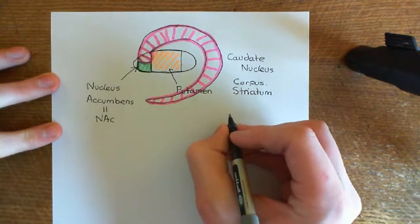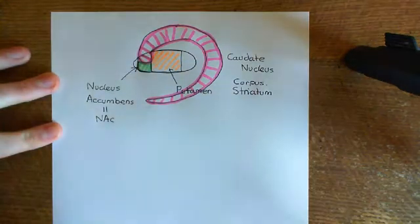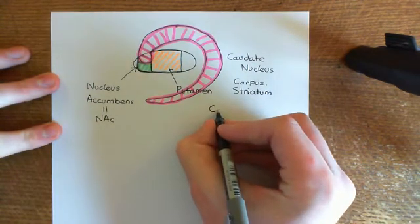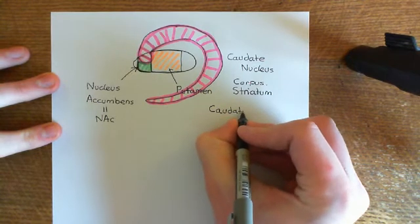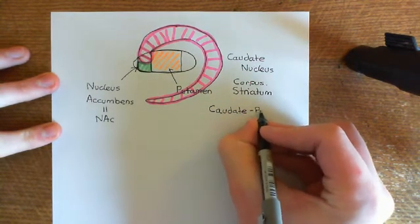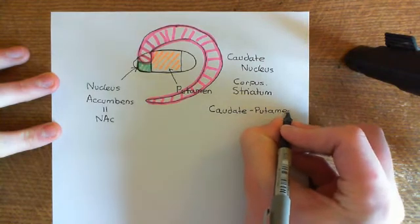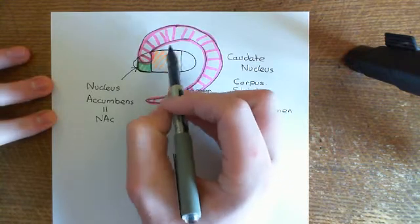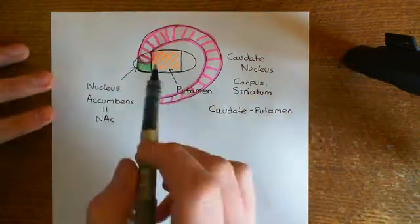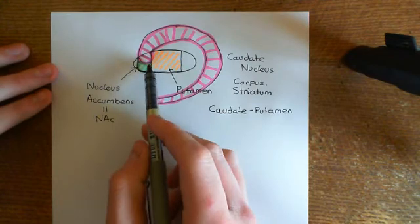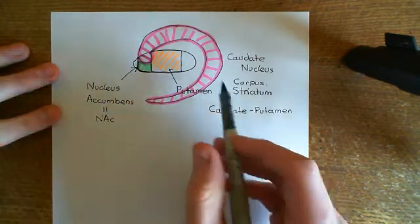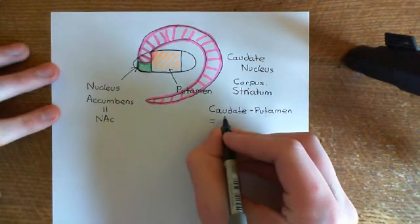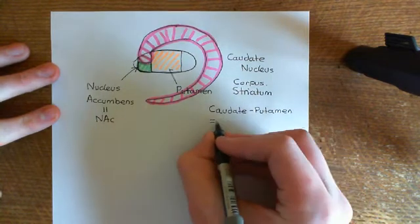There are more useful terms that are going to be useful to us in talking about the basal ganglia. One of the terms is the caudate-putamen, which means the caudate and the putamen together without the nucleus accumbens, because these two portions are going to be extremely important in the basal ganglia. Indeed, they're part of the basal ganglia, whereas the nucleus accumbens isn't.